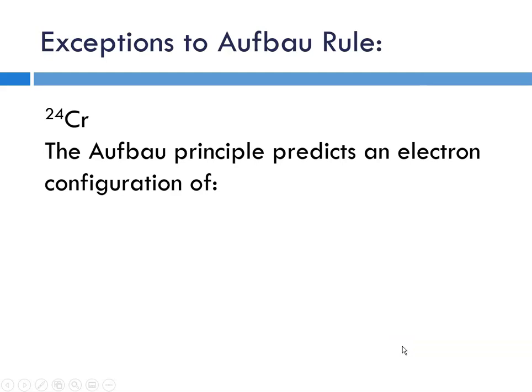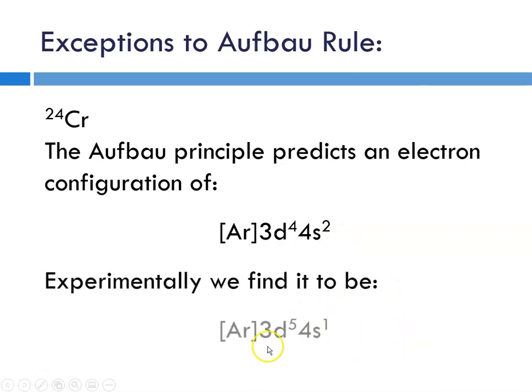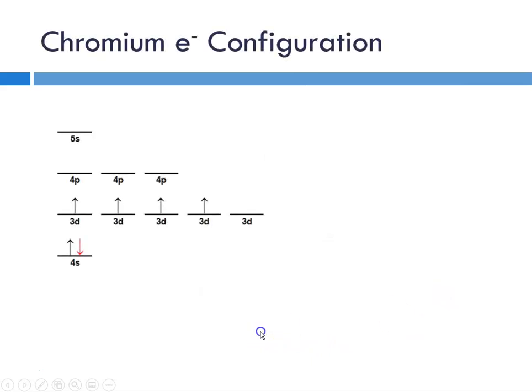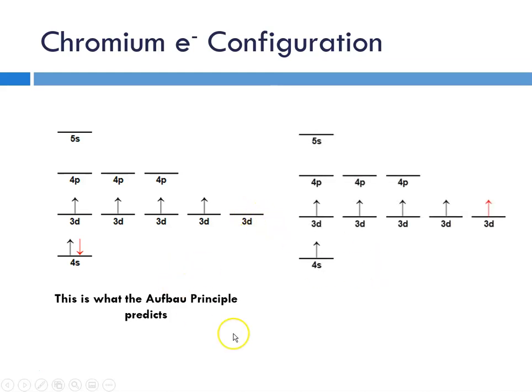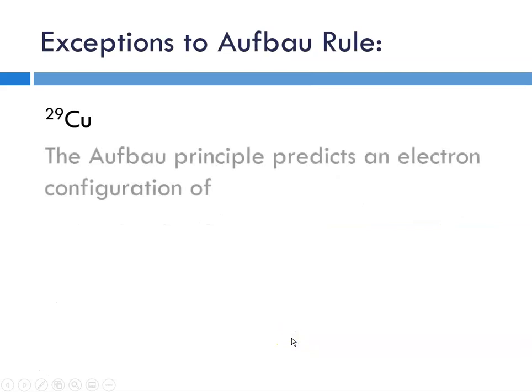For chromium, the Aufbau principle predicts an electron configuration of 3d4 4s2. What we actually find experimentally is 3d5 4s1. Although the Aufbau principle would predict a full s sublevel and an empty d orbital, what actually happens is one of the s electrons leaves the 4s and instead occupies the 3d sublevel.